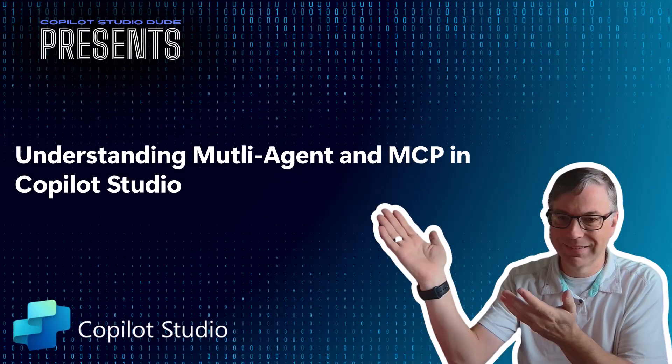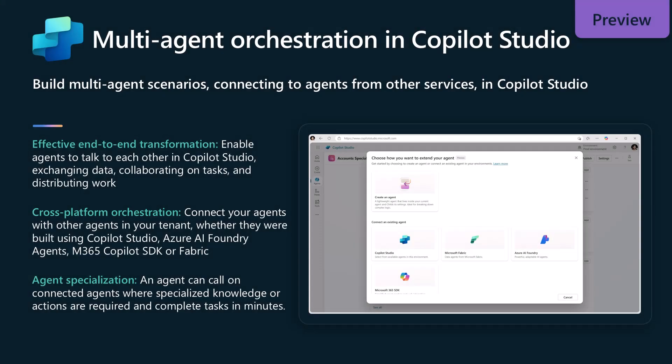In this video, I'm going to help you understand the difference between multi-agent and MCP and how they work inside a Copilot Studio. Let's first understand what we mean by multi-agent or multi-agent orchestration. This is where different agents are available to be brought into another agent — you can think of it as a parent-child relationship, where one agent understands the capabilities of another and orchestrates to the right place to fulfill the user's request.